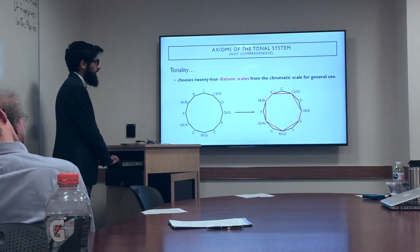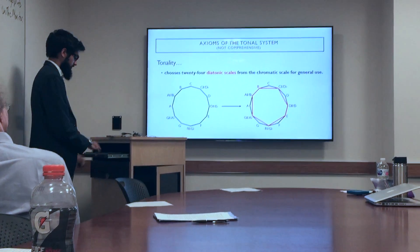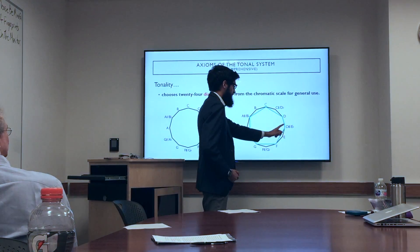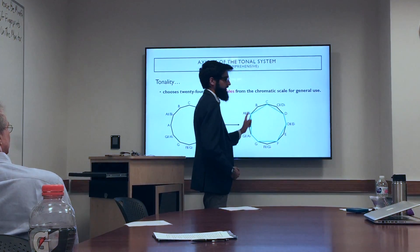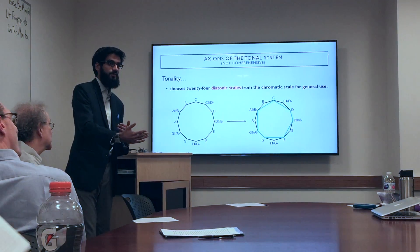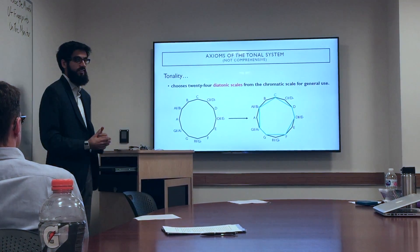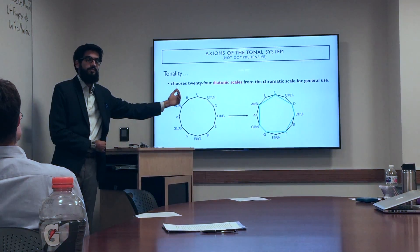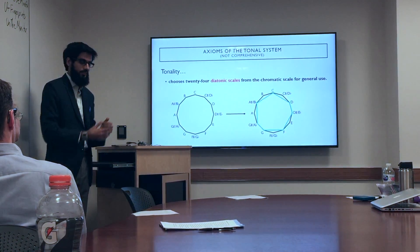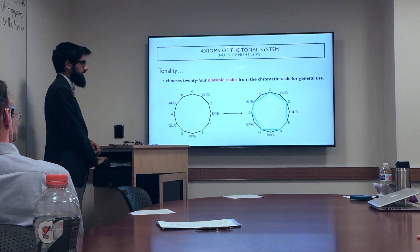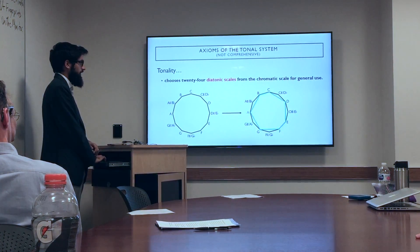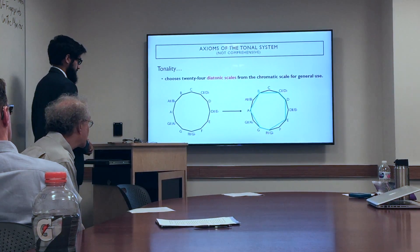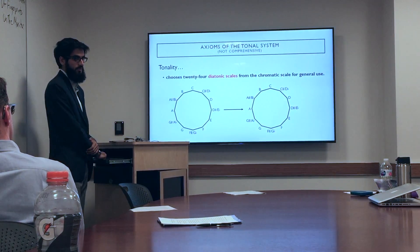We also have 12 minor scales, which have a different intervallic construction: whole step, half step, whole step, whole step, half step, whole step, whole step. This is axiomatic, so I won't explain how this came about — there is a long, complicated history, but it's beyond the scope of this presentation. Here's the C minor scale, and again since we have 12 different starting pitches, that creates the second 12 of our set of 24 diatonic scales used in the tonal system.